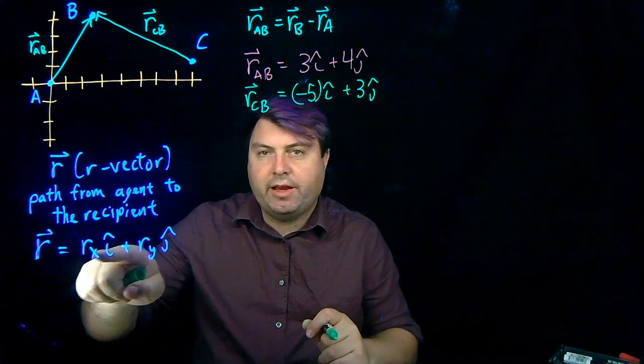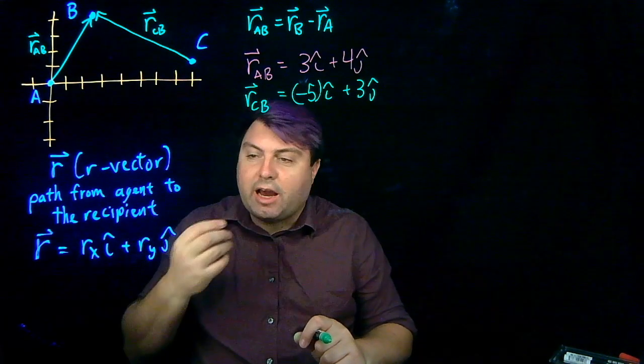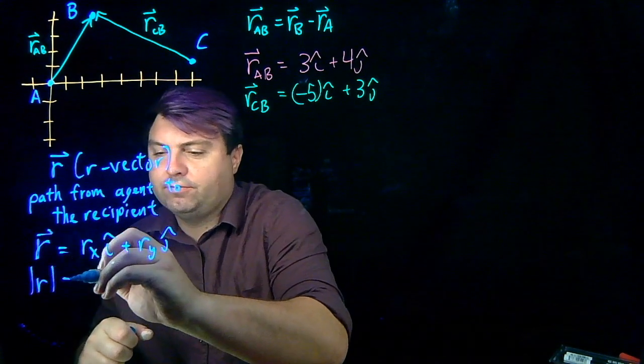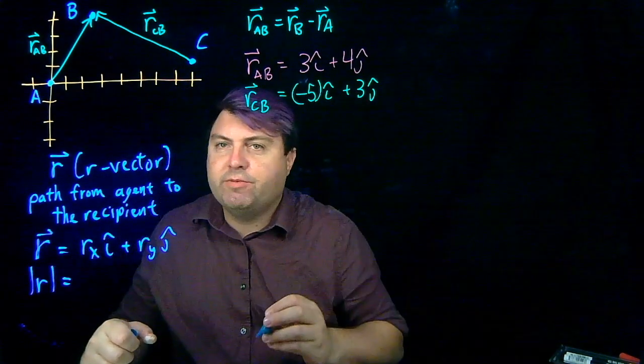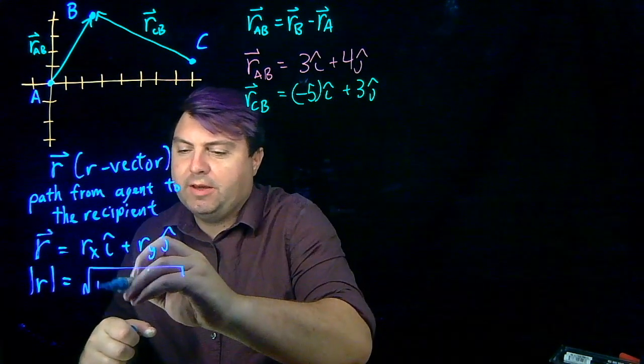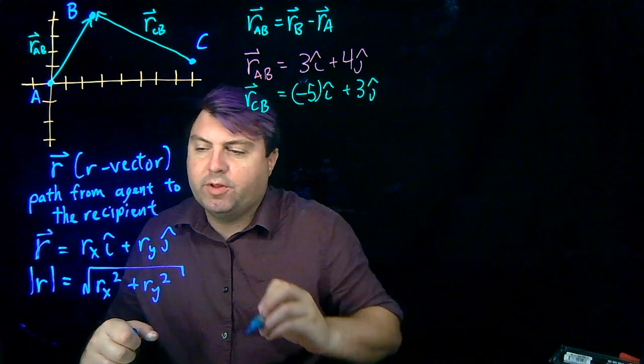So if we can get our x and our y, then things get a lot easier. I think and I hope that everyone feels pretty confident about how to find the magnitude of r. In this case, we just use Pythagorean theorem. So square root of r_x squared plus r_y squared.